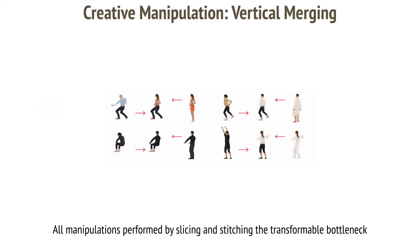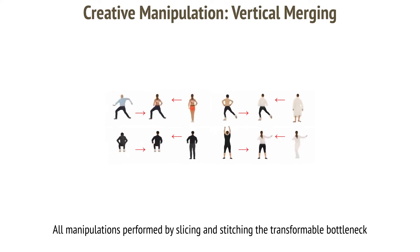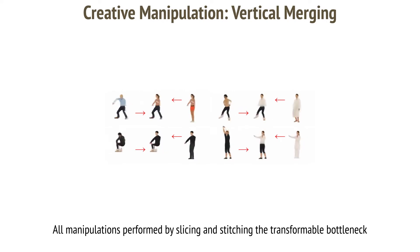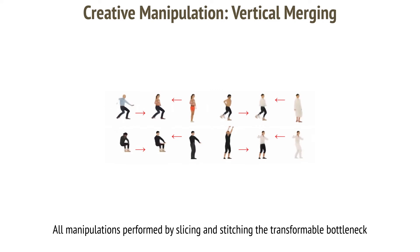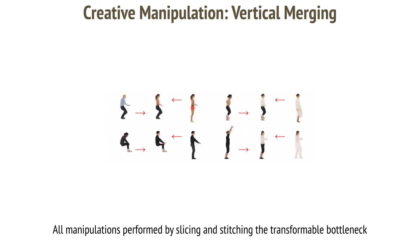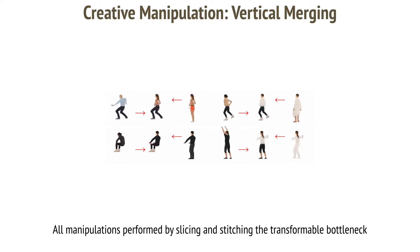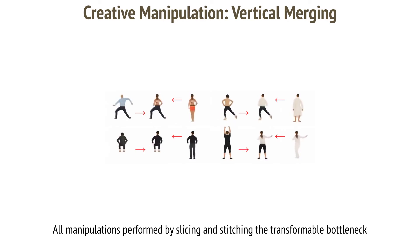We can merge components of different volumes to create new structures. Here the people in the second and fifth columns were created by merging the lower and upper halves of the volumes extracted from adjacent subjects. This stitching is performed once for each target subject using the initial extracted bottlenecks, and the resulting bottleneck is then rotated to synthesize novel views of the target.